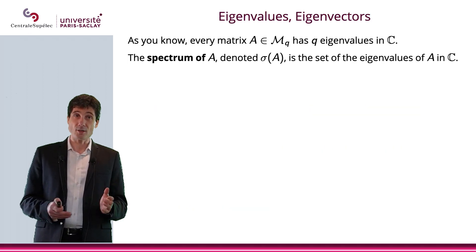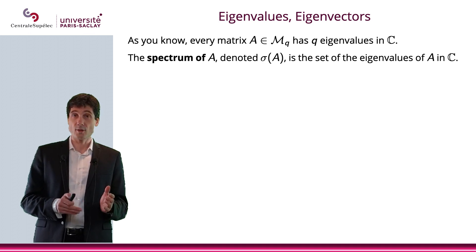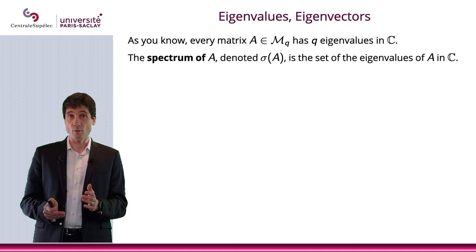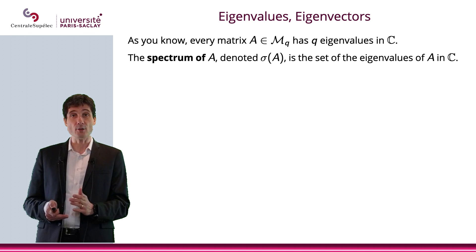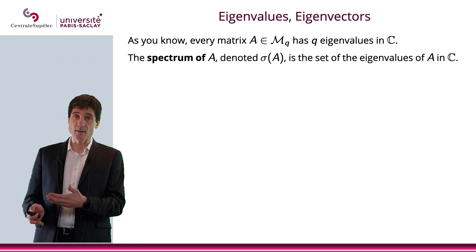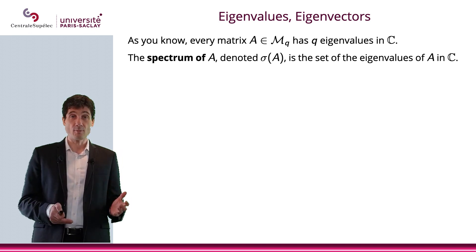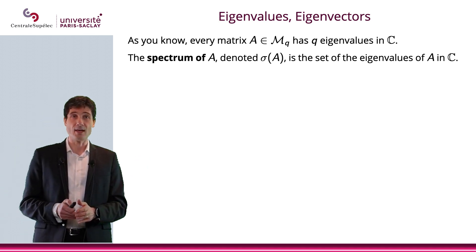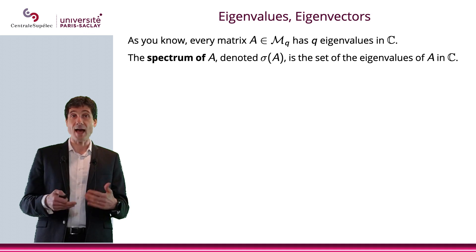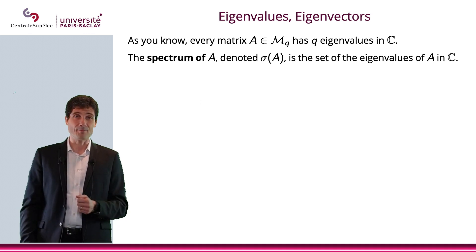Let me remind you that when you have a matrix A, which is q times q, with values in ℝ or ℂ, then it will have q eigenvalues in ℂ counted with their multiplicity. The spectrum of A, which we denote by σ(A), is the set of the eigenvalues of A, which is included in ℂ.